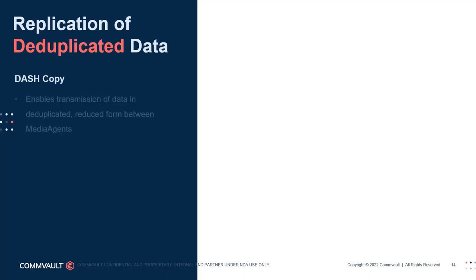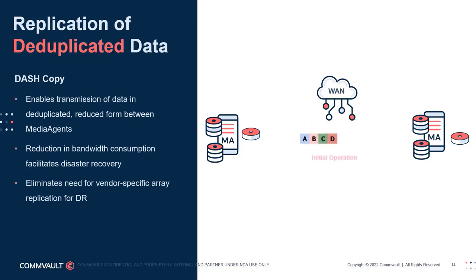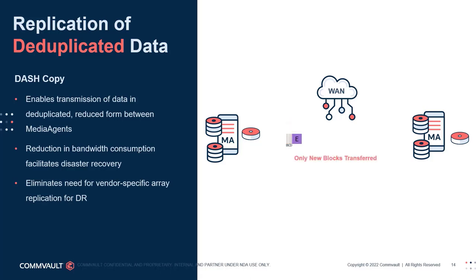Let's start with DashCopy. DashCopy is a technology that enables the transmission of data in its deduplicated, reduced form factor between media agents. This includes the capability to recover data and maintain different retention periods independently from the primary copy. This reduction in bandwidth consumption facilitates disaster recovery and eliminates the need for vendor-specific appliances or third-party replication technologies. When sizing a solution that uses DashCopy, the primary copy and any additional copies should be sized independently, including DashCopy configurations using cross-site replication. A DDB is also required on the destination media agent for dedupe signature comparison.